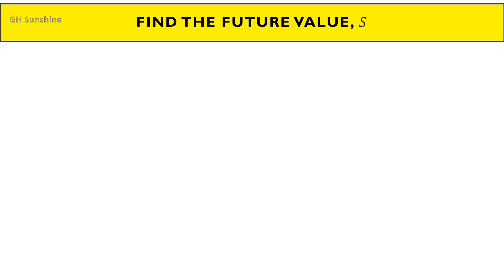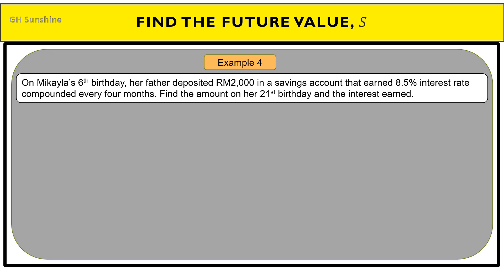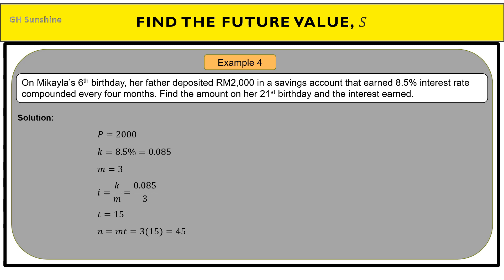Now focus on how to find the future value. On Mikayla's sixth birthday, her father deposited RM2,000 in a savings account earning 8.5% interest compounded every four months. Find the amount on her 21st birthday and the interest earned. List all information: principal equals RM2,000, K equals 0.085, and 'compounded every four months' means 12 divided by 4, so M equals 3.